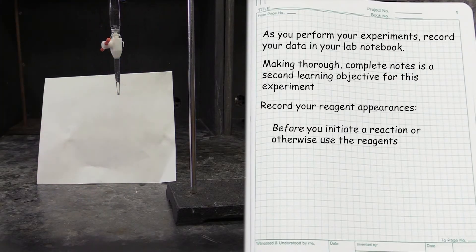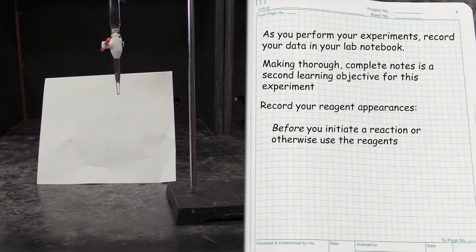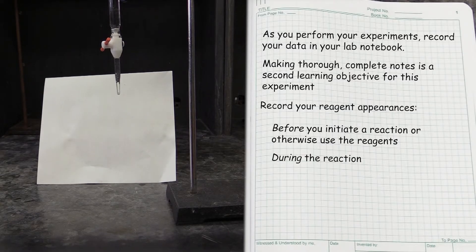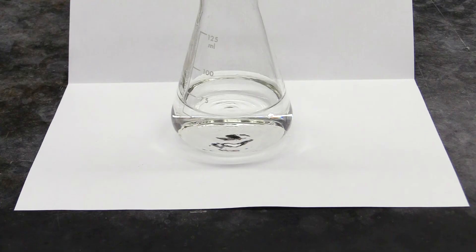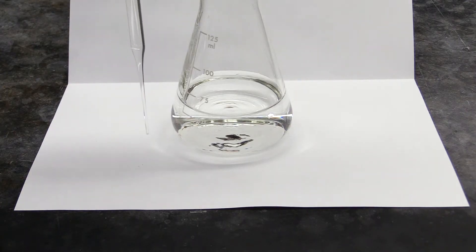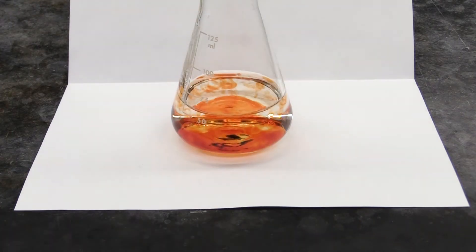To make sure your notes and observations are complete, you will need to record the appearance of your reagents before you use them, during any reaction you perform with them, as well as their appearance after the reaction is complete. In this example, you can see the solution here is initially colorless, but if we add another solution that is also colorless to it, we get a reddish color.